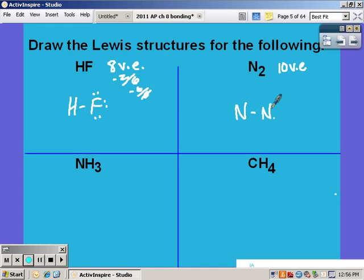For nitrogen you have ten electrons. You draw your line. Now we have eight. Each nitrogen needs six more. So we need twelve but we only have eight. When you need more than you have you have to share more.